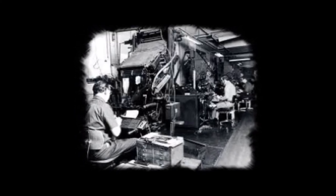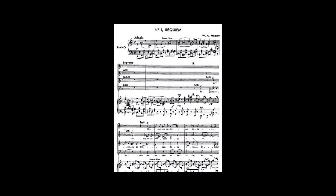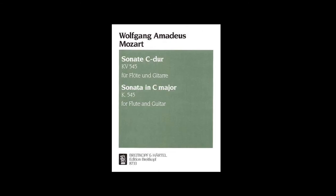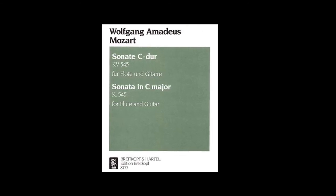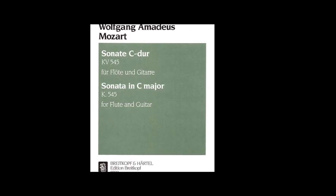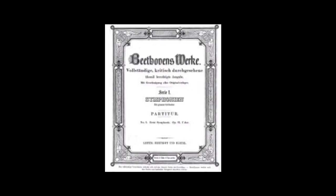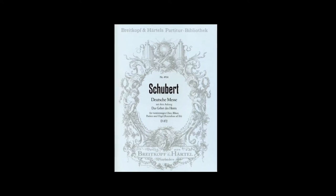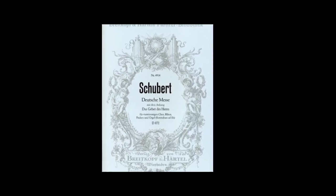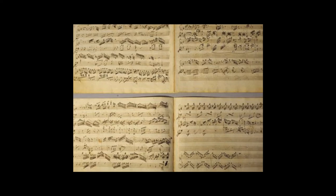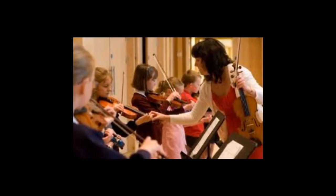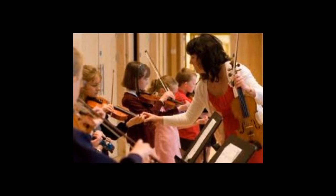During Mozart's time, people had started to develop publishing companies because they realized that printing music was a very good way to make money. Mozart's music was printed by the original German music publishing enterprise, which also printed music for other German composers including Beethoven, Haydn, Schubert, and Schumann. Without the invention of the printing press, Mozart's music would probably have never been published, seen by the public eye, and become a staple of musical education today.